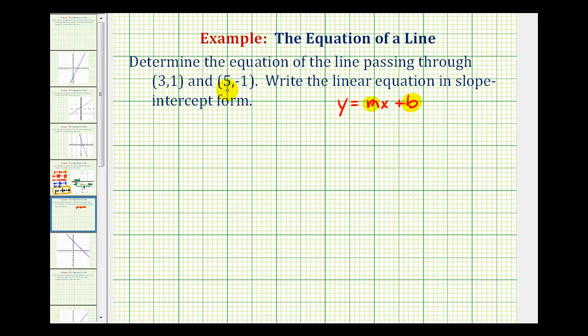Remember, if we have two points on a line, we can determine the slope of the line by using the formula m equals y sub two minus y sub one divided by x sub two minus x sub one. Where these are the y coordinates and these are the x coordinates. So, let's start by finding the slope.